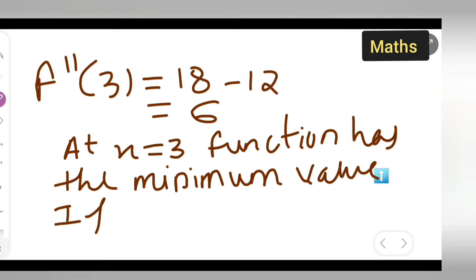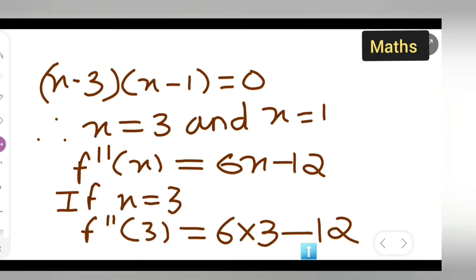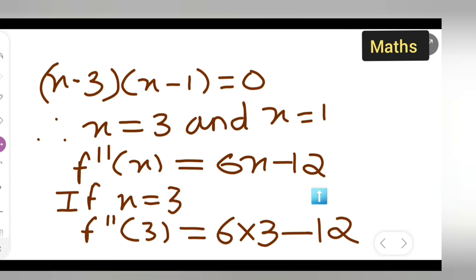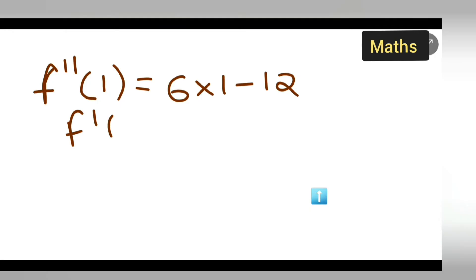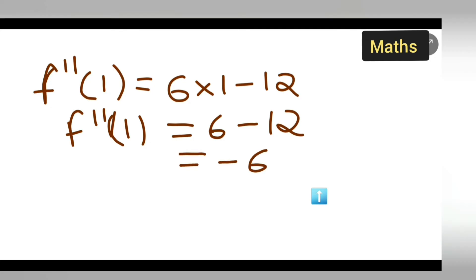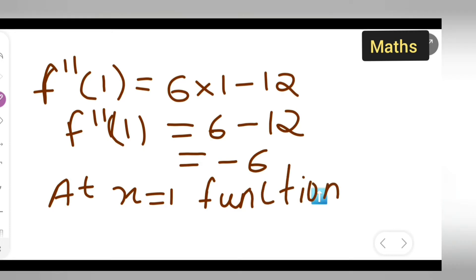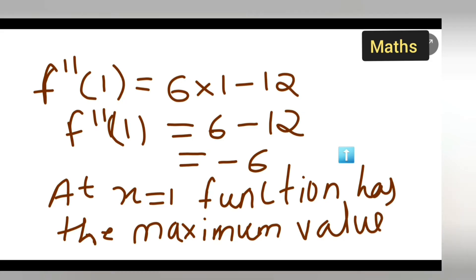Now let x = 1. Substituting into f''(x): f''(1) = 6 × 1 - 12 = 6 - 12 = -6. Since the result is negative, at x = 1 the function has a maximum value.